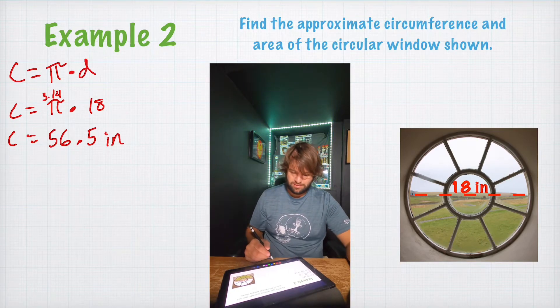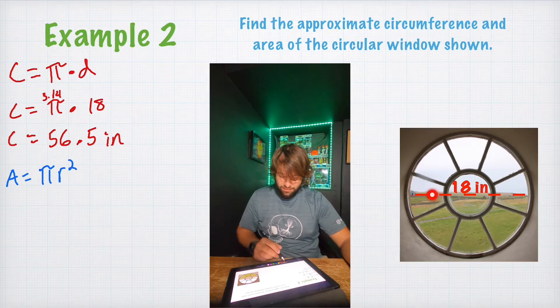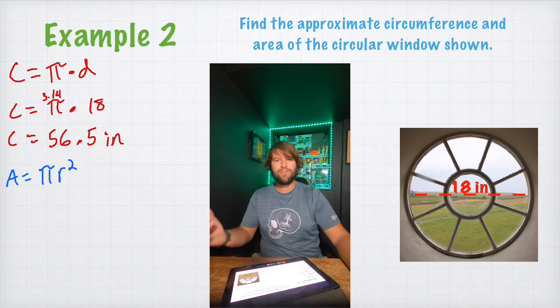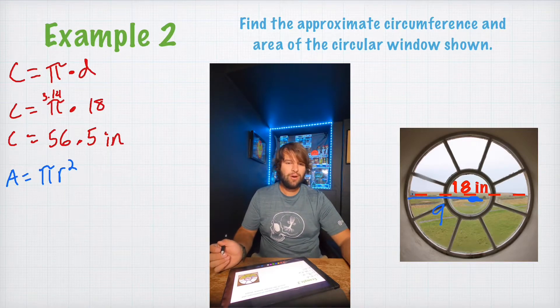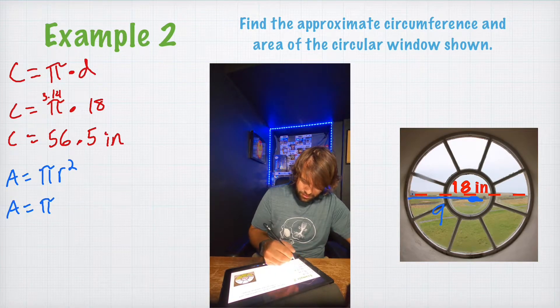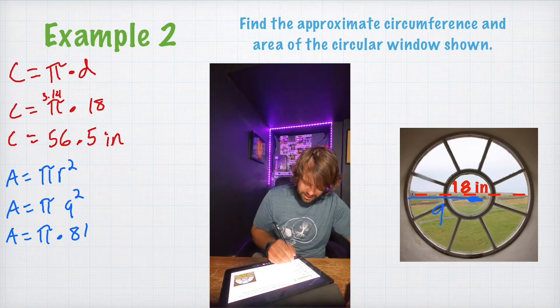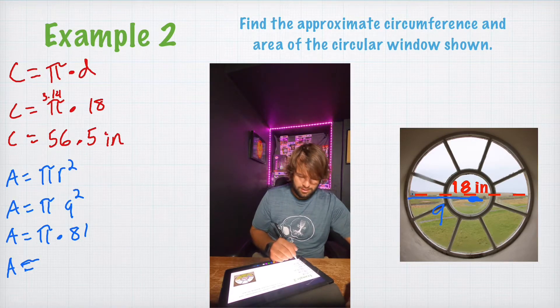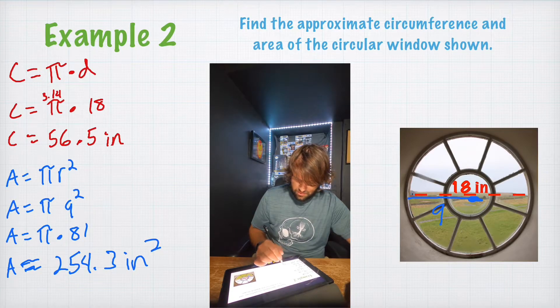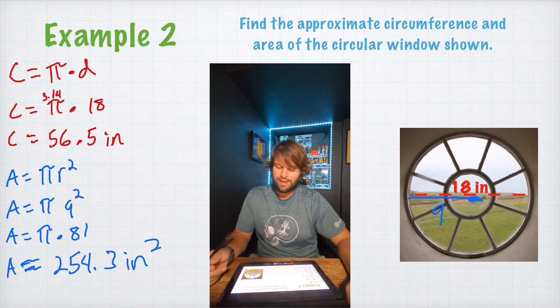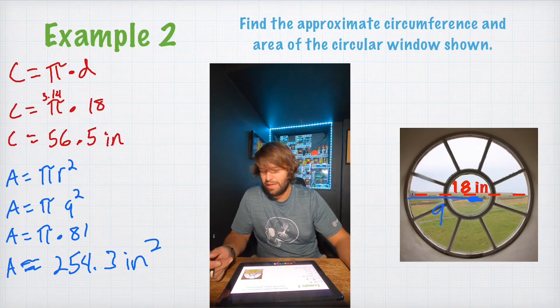The next thing they want us to find is area. And area equals pi r squared. So, we need to figure out what the radius of our window is. Well, the radius is just simply half the diameter. So, half of 18 would be 9. So, let's just plug it in. A equals pi or 3.14 times 9 squared. So, A equals pi times 81. So, the area of our circle is going to roughly equal 254.34 inches squared. I hope that made sense. Not too bad. Just another pretty simple example.